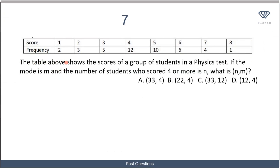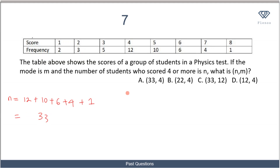In this question, a table shows the scores of a group of students in a physics test. If the mode is m and the number of students who scored four or more is n, find m and n. For n, we count students scoring 4, 5, 6, 7, and 8: 12 scored 4, 10 scored 5, 6 scored 6, 4 scored 7, and 1 scored 8. Summing these gives n = 33.